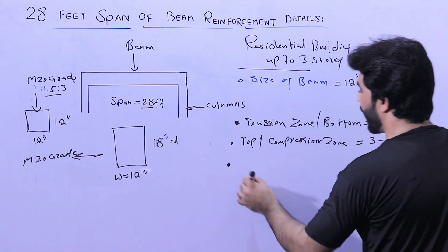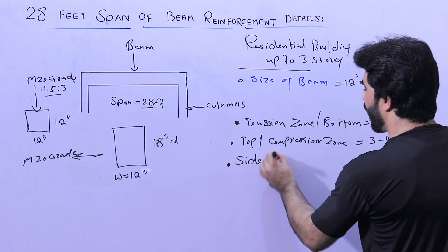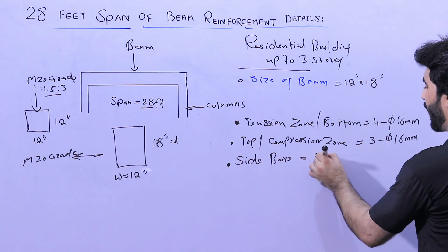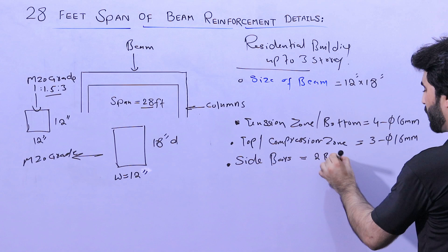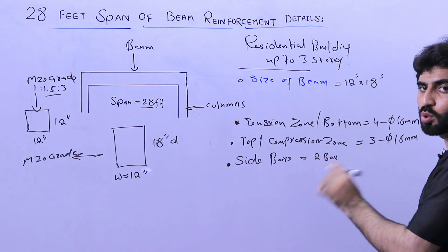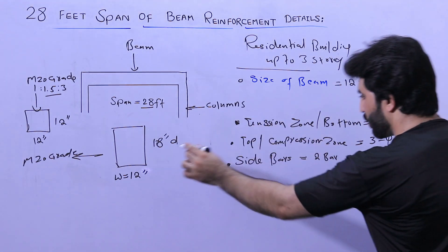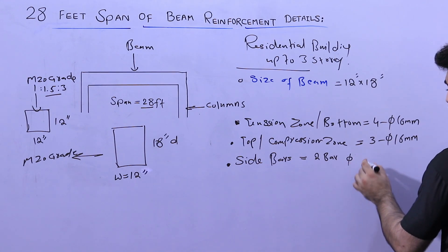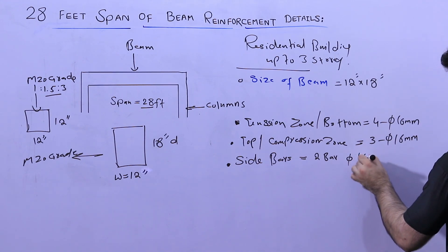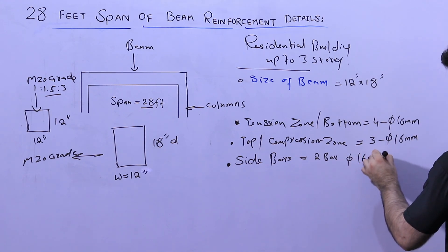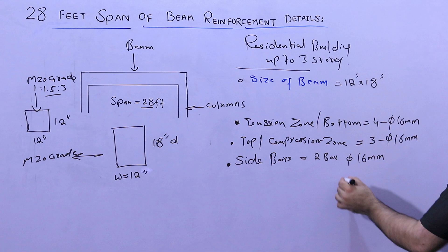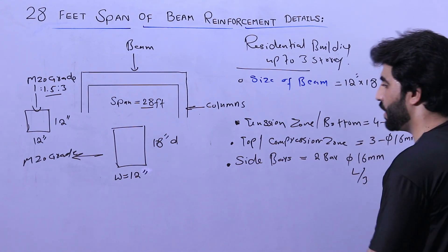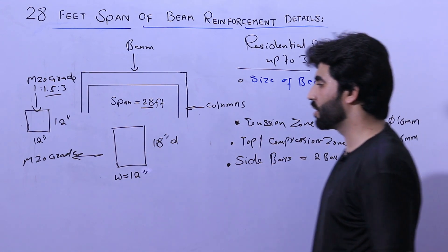For the side bars, we provide 2 side bars with a diameter of 16 mm, placed at a distance of L by 3 from each support. Now let me guide you in detail about this.